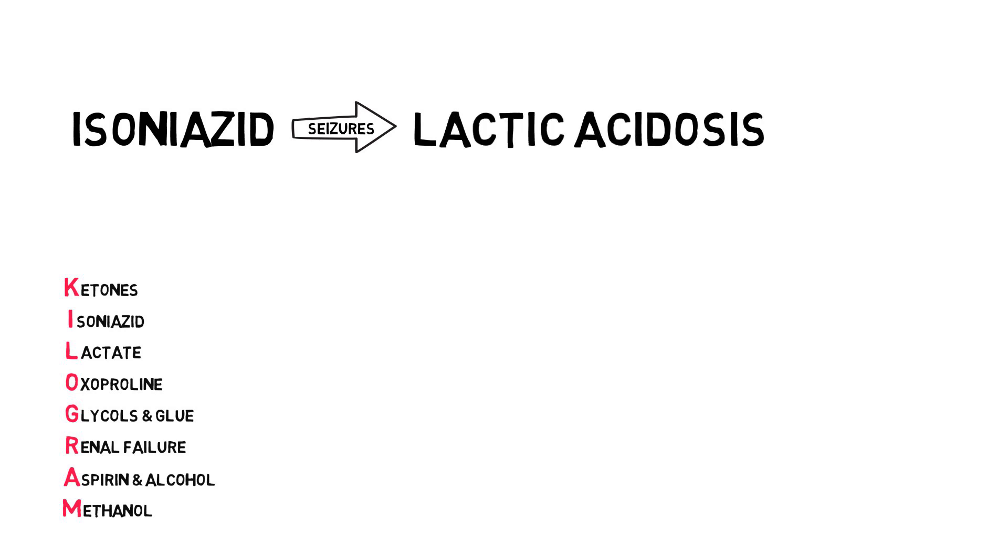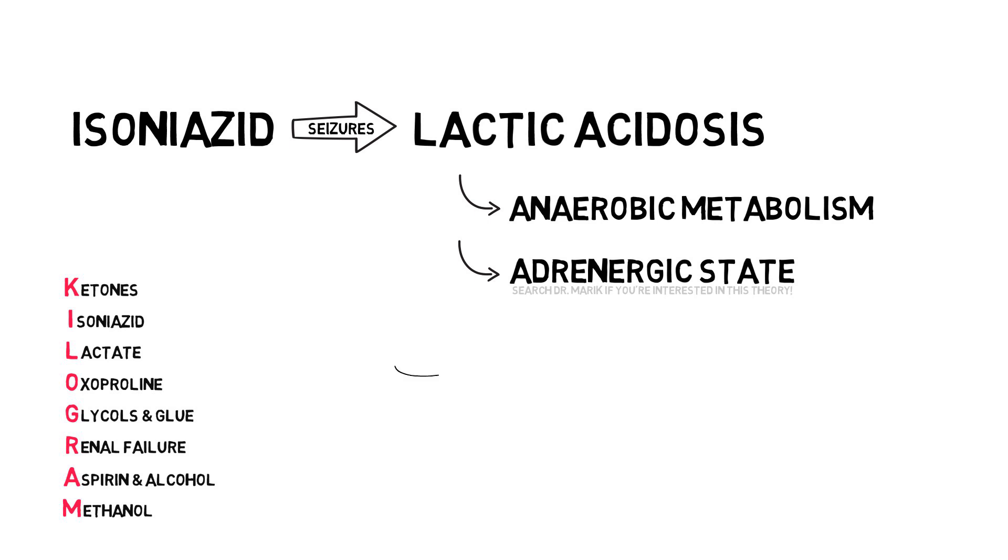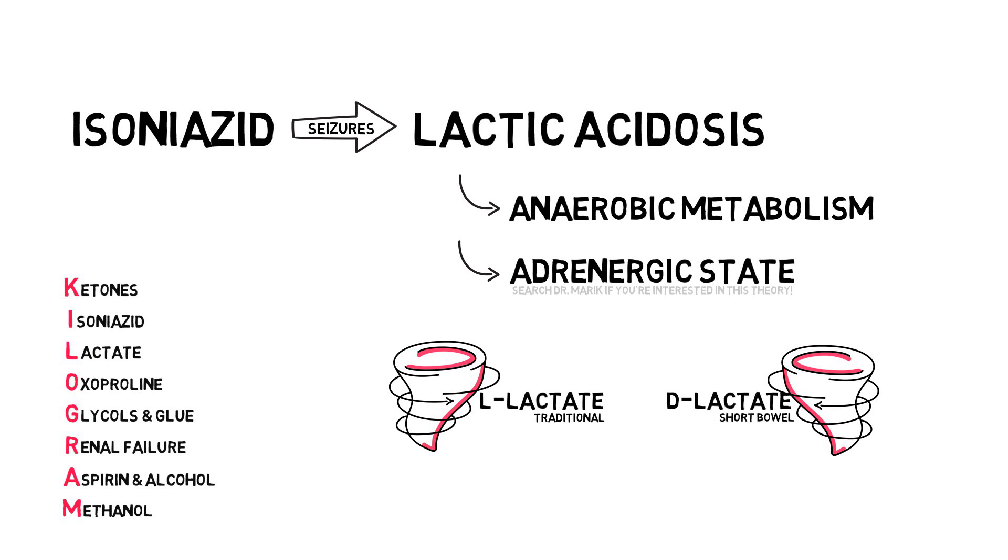Lactate. Lactic acid is formed as a result of anaerobic metabolism in cellular hypoxia, or as a result of an adrenergic state, which I'll get back to in a future video as well. Note that lactate exists in two isomeric forms. L-lactate, which is the traditional one, and D-lactate, overproduced in short bowel syndrome. Check your clinic to know if the lab results are either only L-lactate, or the total sum of both lactates. I'll get back to lactic acidosis and treatment in a future video as well.